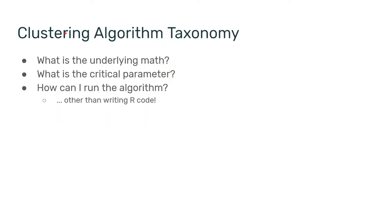For the taxonomy of clustering algorithms, there are three main questions you should ask. First, what is the underlying math? I'd argue that for many users this is the least important question, because you care more about results than theory, but it is helpful to be aware of some of the terms. Second, what is the critical parameter you need to set when running the algorithm? And finally, how can you run the algorithm other than writing R code? You can always get the R or Python package, but ideally there are utilities that allow you to do it more easily.